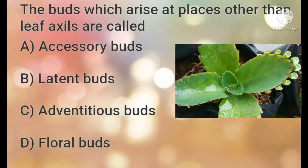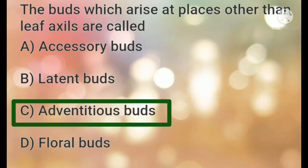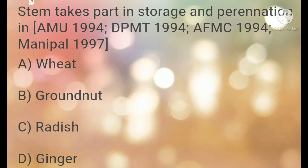The correct answer is adventitious buds. These are buds which arise on the margin of the leaf or from other positions outside the normal axillary region. You can see in the diagram that these adventitious buds arise from the margin of the leaf. This is called an adventitious bud or epiphyllous bud.